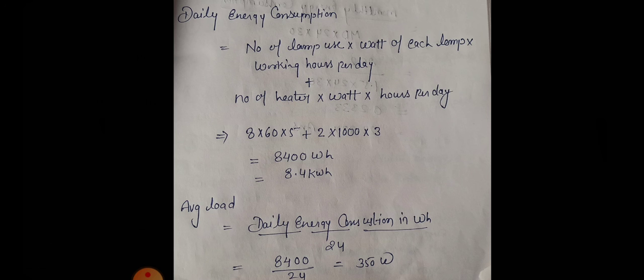As we know, if we are going to consider one unit, it is equal to 1000 watt hours for an hour. So number of lamps used into watt of each lamp into working hours per day, plus